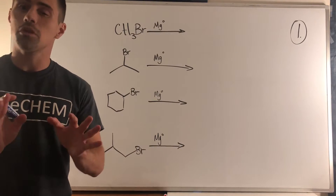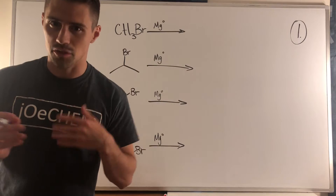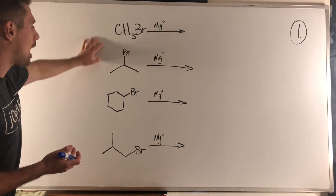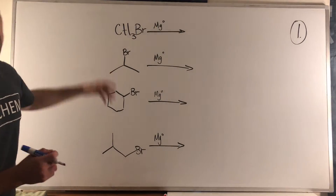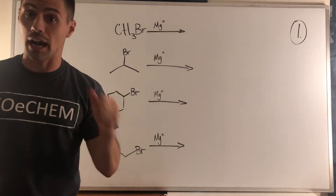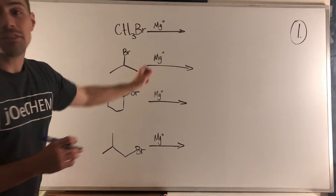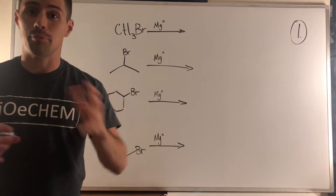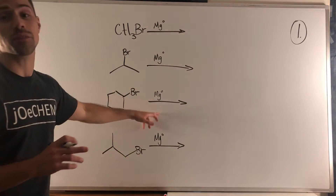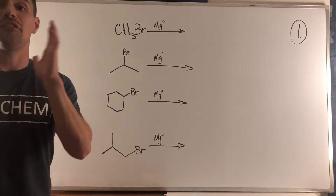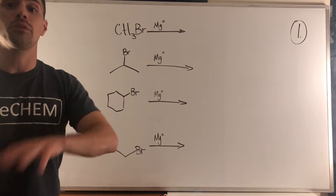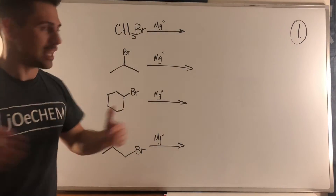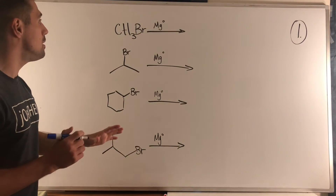In problem one I wanted to ease in with a warm-up. We have these alkyl halides — these are alkyl bromides but they easily could have been alkyl chlorides — and all we're doing is treating them with elemental magnesium. The little circle just means elemental. In the preparation of Grignard reagents you might even see magnesium in a solvent like THF, but we're just using elemental magnesium here.